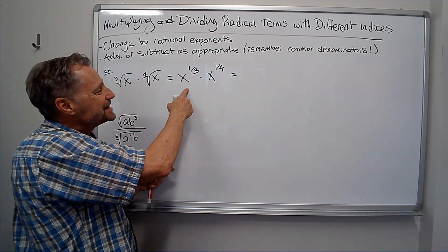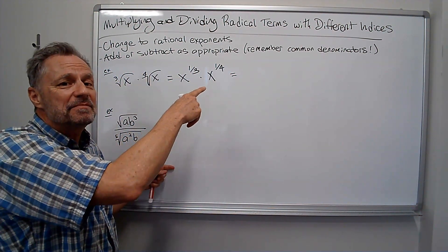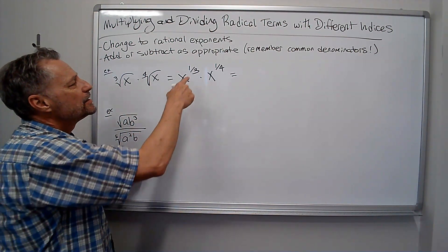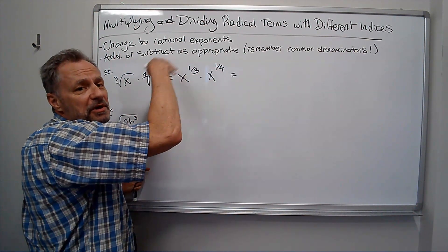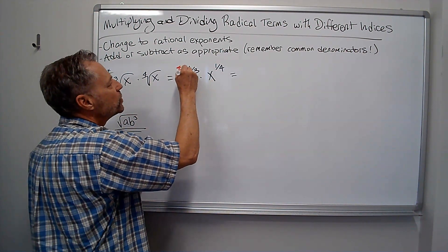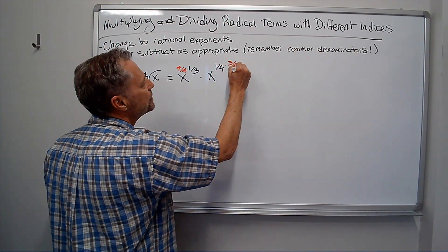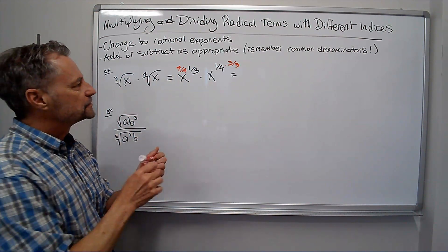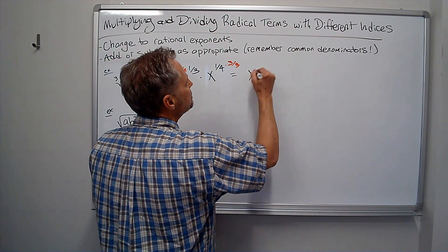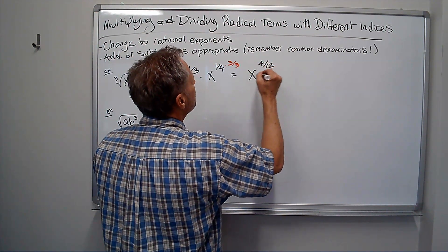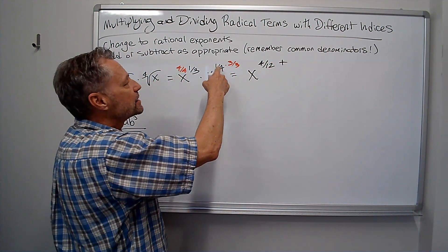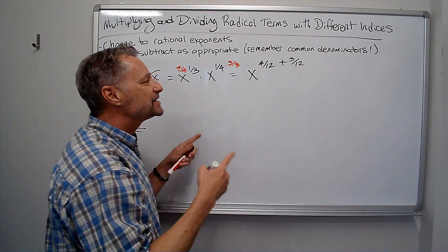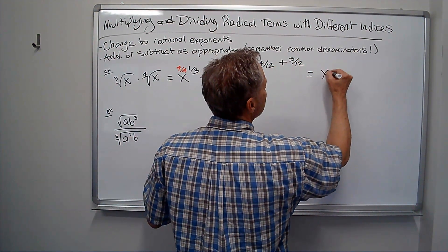If I want to add these exponents, I can only add them if I have a common denominator. So let's go ahead and get a common denominator. Three and four both go into twelve, so let's build those both up to twelve. I'll multiply this one by four over four, and this one by three over three. Multiplying straight across, I get x to the four-twelfths, which of course is the same as x to the one-third. And then I'm going to add to it this exponent right here, three-twelfths. And so when I add those together, I get x to the seven-twelfths.